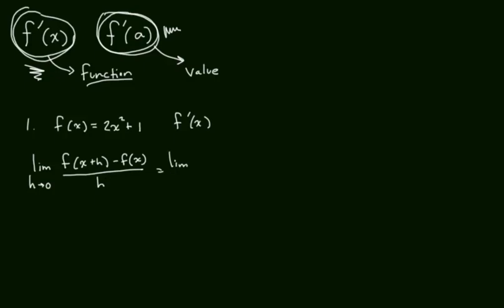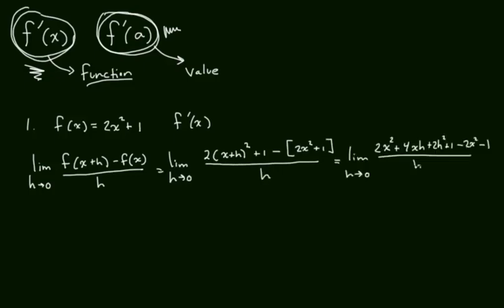So, the algebra is the same. I'll move quickly. The limit as h goes to 0. We have 2 times x plus h quantity squared plus 1 minus f of x which is 2x squared plus 1, all over h which equals the following. Notice that I distributed this to both terms. I don't want to make that mistake. And we also see here that 2x squared cancels out with 2x squared. 1 cancels out with 1.